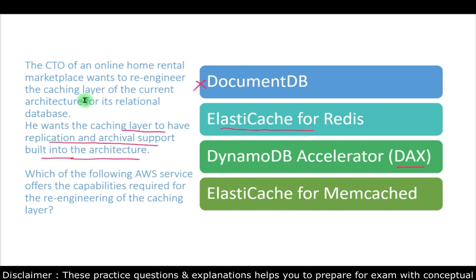ElastiCache for Redis is a blazing fast in-memory data store that provides sub-millisecond latency to power internet-scale real-time applications. It is a great choice for real-time transactional and analytical processing use cases such as caching, chat and messaging, gaming, and leaderboards. Since we need a caching layer, ElastiCache for Redis seems correct here. Let's review the remaining options before making a final choice.